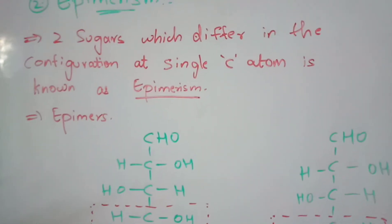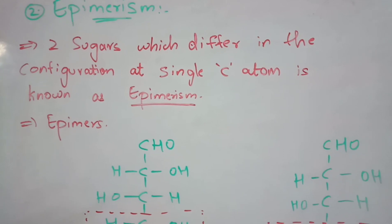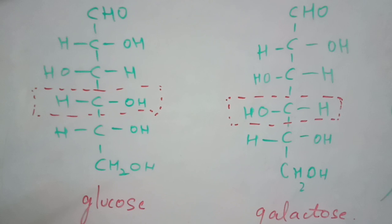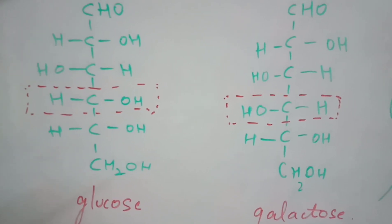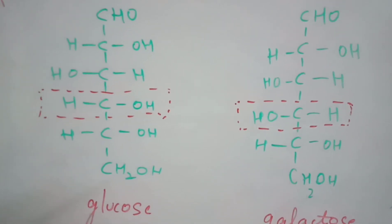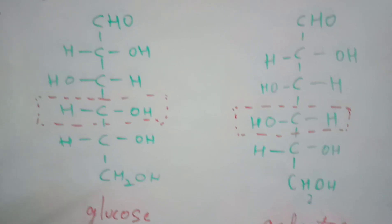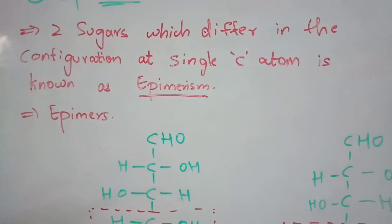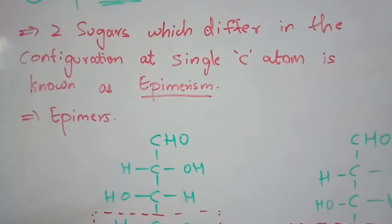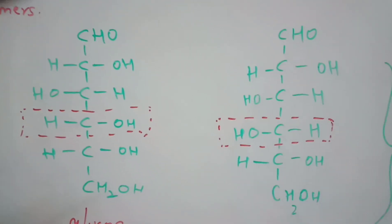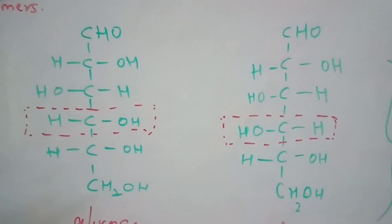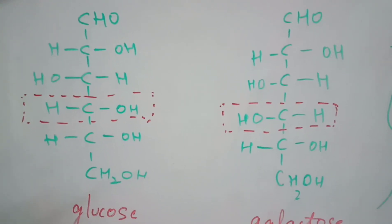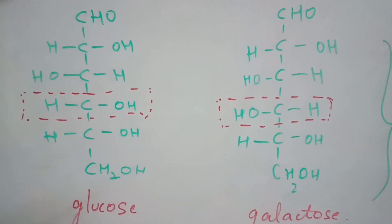As given in the definition, two sugars — glucose and galactose — differ in configuration at a single carbon atom (the fourth carbon). The change in position of H and OH at that single carbon is what defines epimerism, and the compounds exhibiting this are called epimers — in this case, C4 epimers.